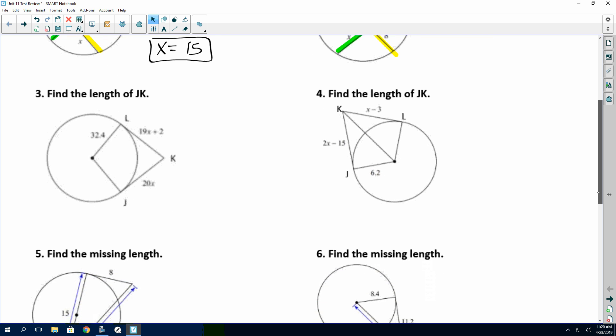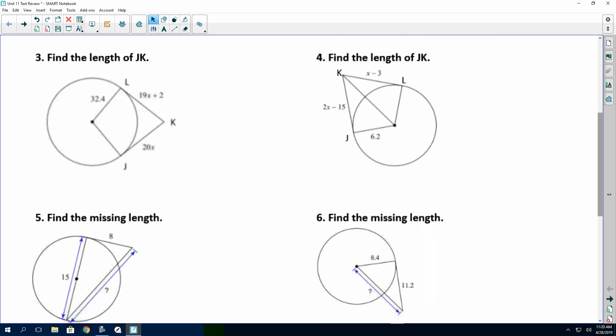All right, now when we get to 3 and 4, what we have shown on 3 and 4 are two tangents. And whenever we have two tangents coming from the same point, they are congruent tangents. So they didn't mark it on here, but you could put tick marks between LK and JK. Or you can think of it as conehead.